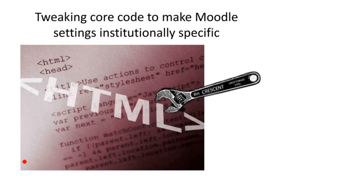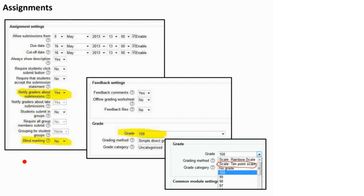In the next section we're going to look at some code edits to change the default settings for assignments site-wide. These screenshots show some of the default settings for a Moodle 2.4 assignment, and I've highlighted a few areas where the default values weren't the ones that our teaching staff wanted to use. For example, 'notify graders' is switched on by default, blind marking is switched off by default, and the grade is by default set to the 100% scale. If you have an institutional scale that you use, you ideally want that to be the default.